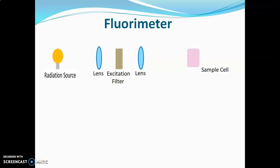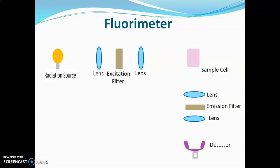The next part of the instrument is at 90 degrees to the radiation source, consisting of a lens, emission filter, and another lens. The emission filter absorbs UV radiations and only visible radiations are passed towards the detector. The detector is present at the end, which measures the intensity of light.